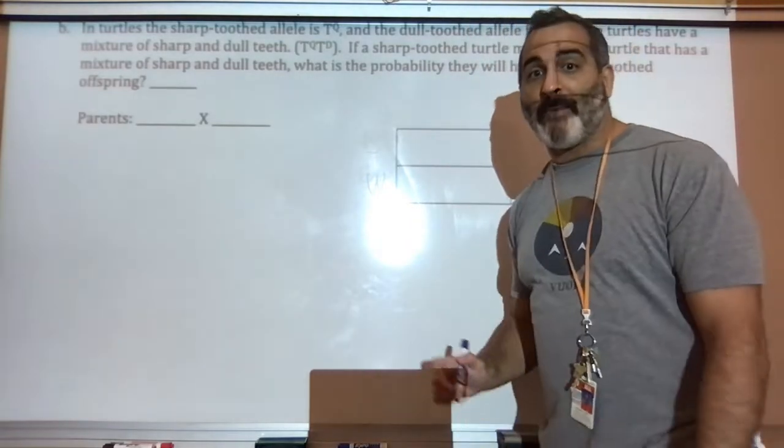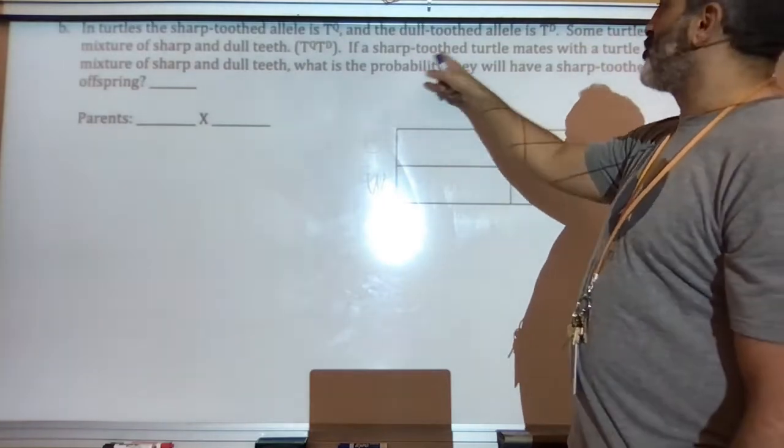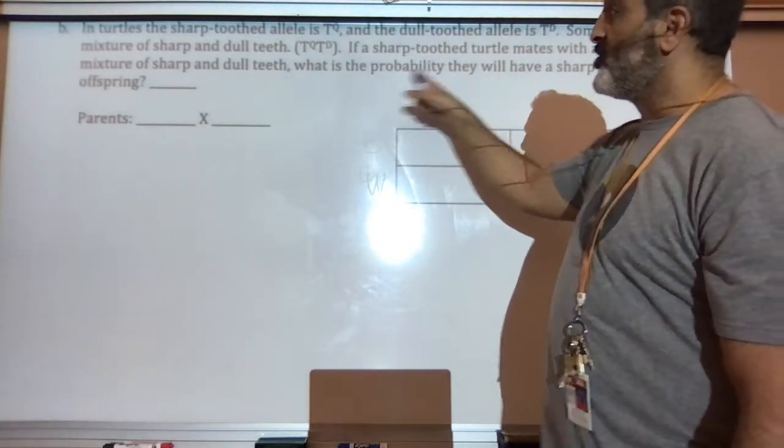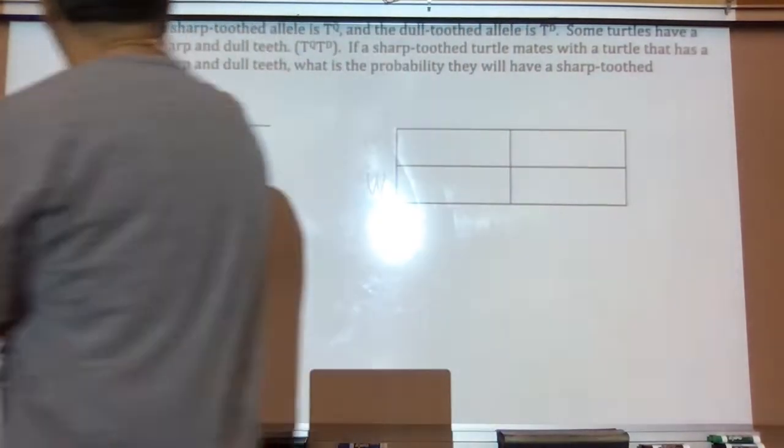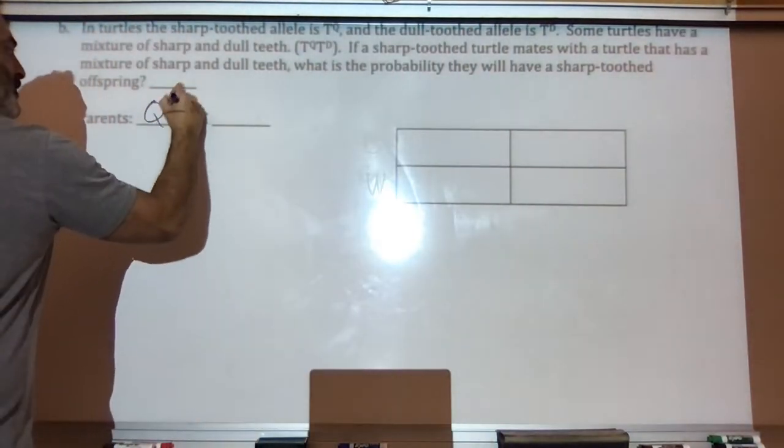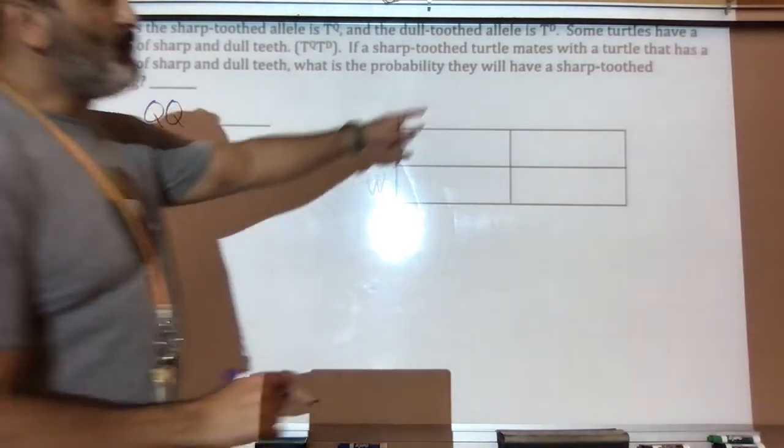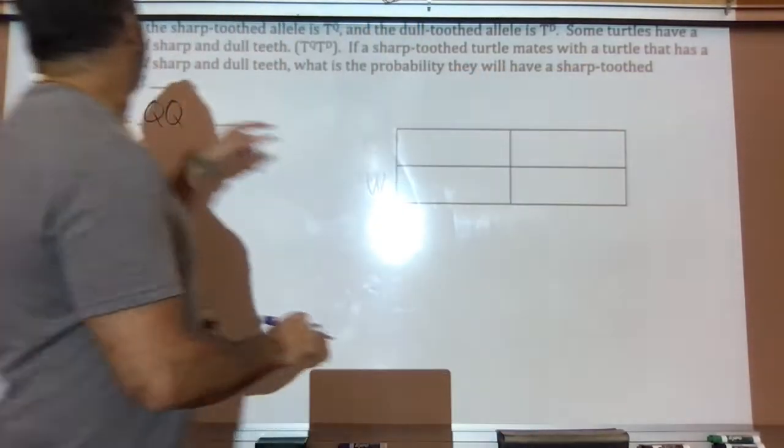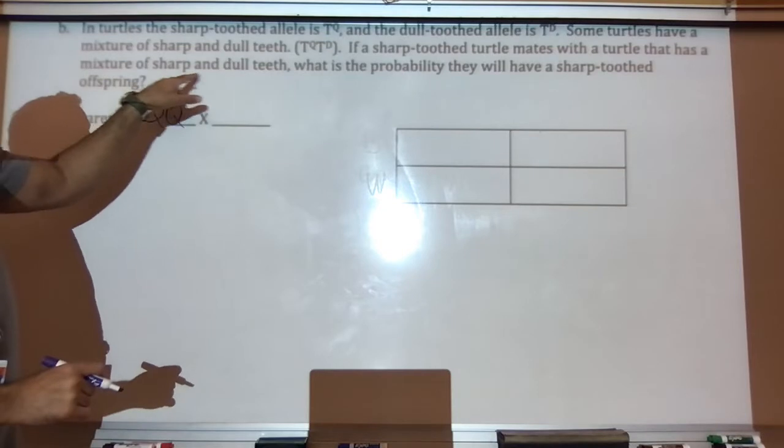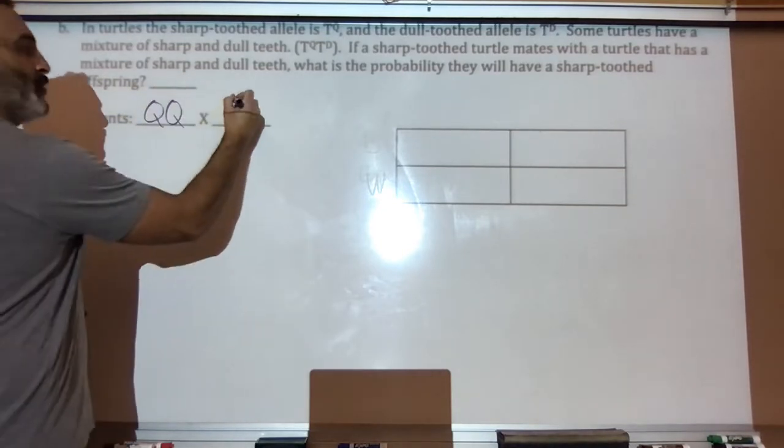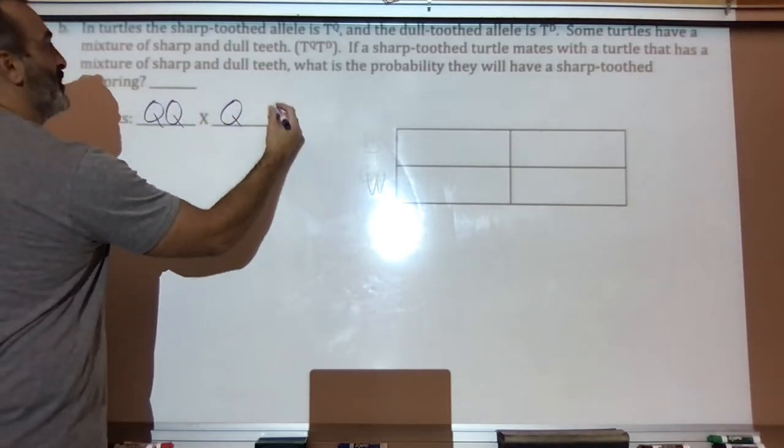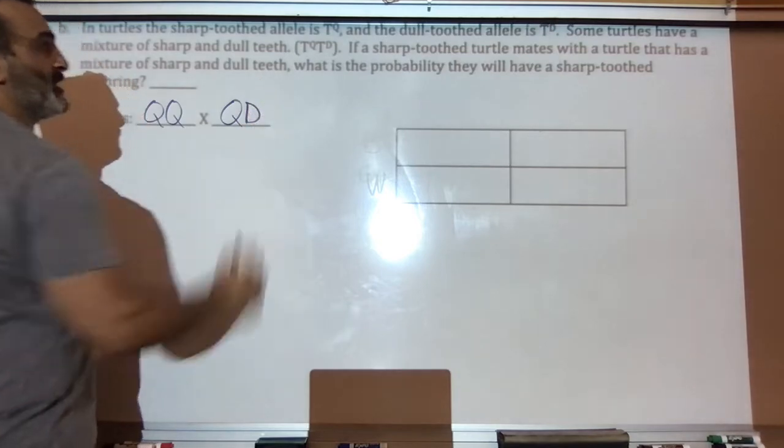One is sharp. So, one is sharp. Sharp is Qs. So, one of the parents has two Qs. Then, they mate with a turtle that has a mixture of sharp and dull teeth. So, they mate with one that has Qs and Ds.